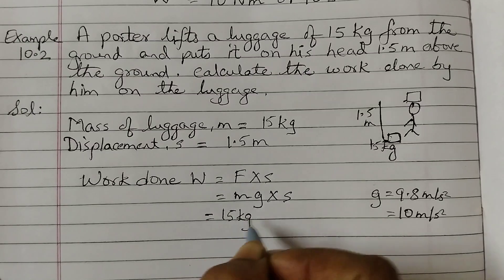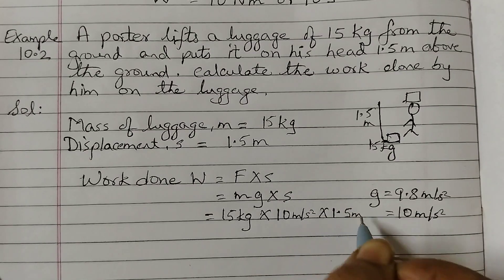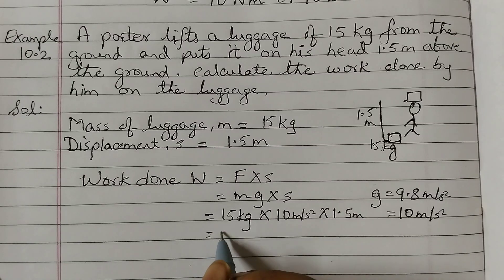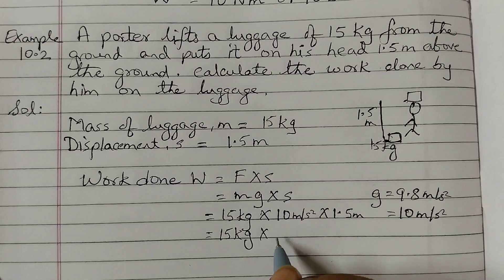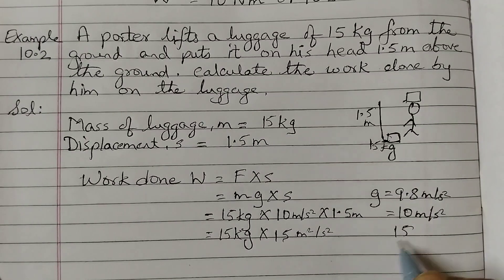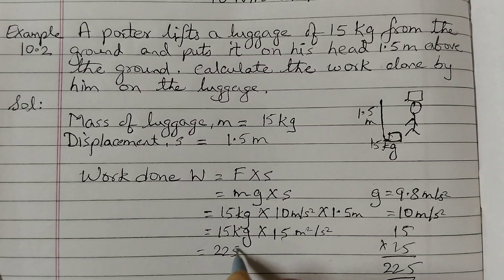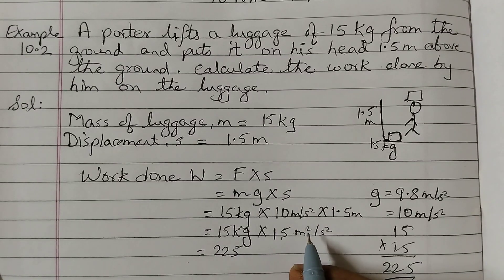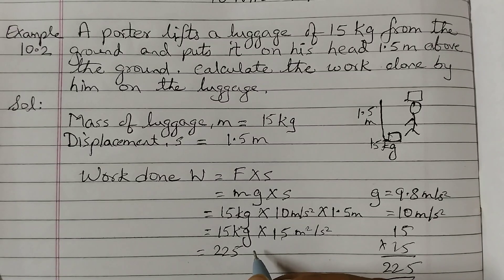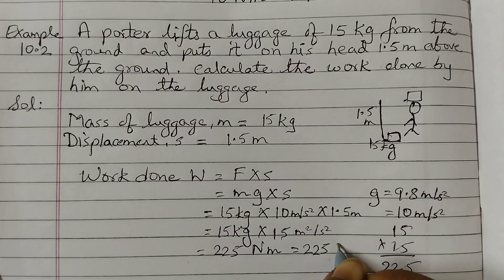So mass is 15 kg, acceleration is 10 meters per second squared, displacement is 1.5 meters. Now we will just multiply this: 1.5 into 10 is 15, so this will be 15 kg times 15, and 15 into 15 gives 225. So that's 225, and the unit of work done is joules — you can also write it as newton meter — so this is equal to 225 joules.